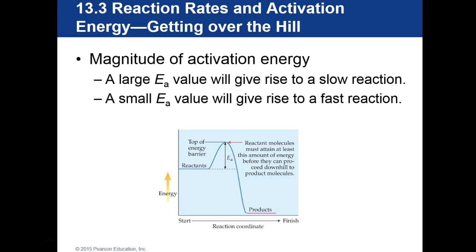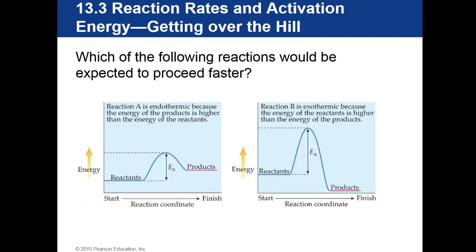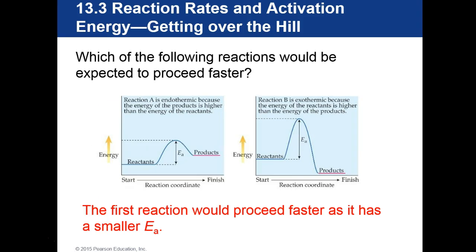The magnitude of activation energy determines reaction speed. A very large activation energy gives rise to a very slow reaction, while a very small activation energy gives rise to a very fast reaction. Which of the following reactions would be expected to go faster — the one with the smaller activation energy or the one with the very large activation energy? The first reaction would proceed faster because it has a smaller activation energy.